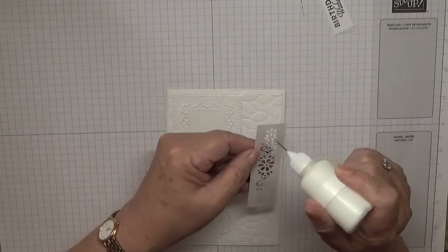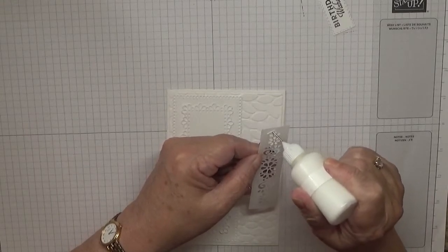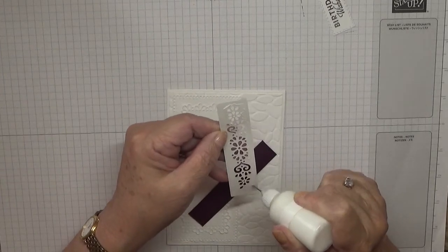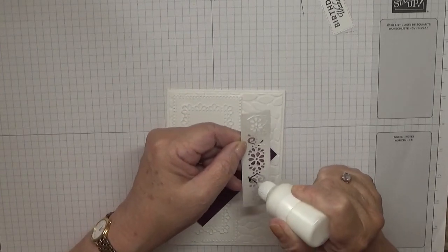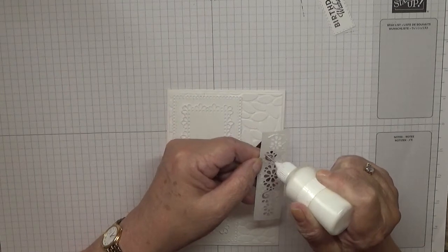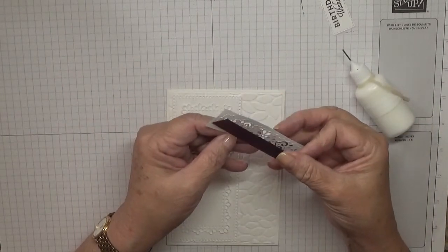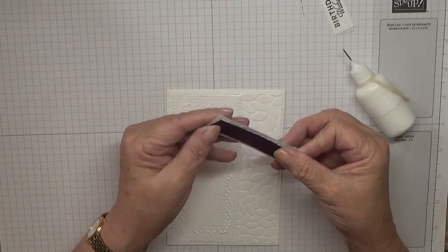What I'm going to do is just glue round the cut out so I don't want to put glue on the black cardstock and I've gone inside the pattern.